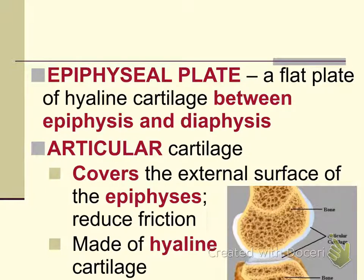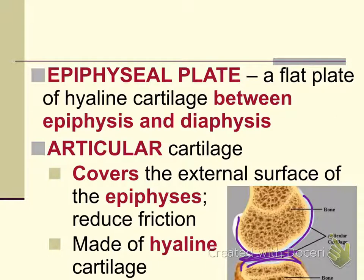The articular cartilage is the white material found on the ends of the bones so that the bones are not touching, and it reduces friction at the joint. It is made up of hyaline cartilage.